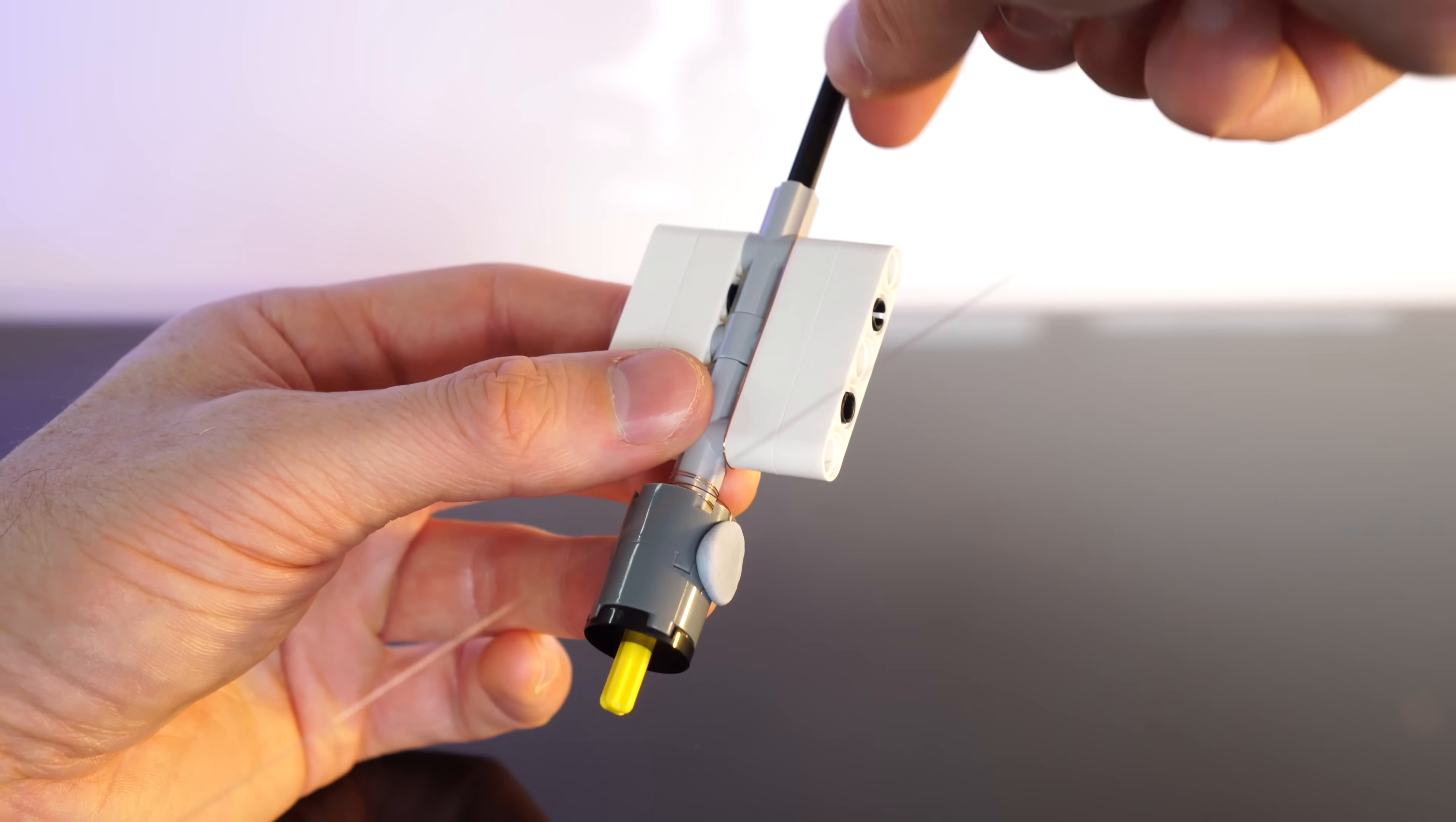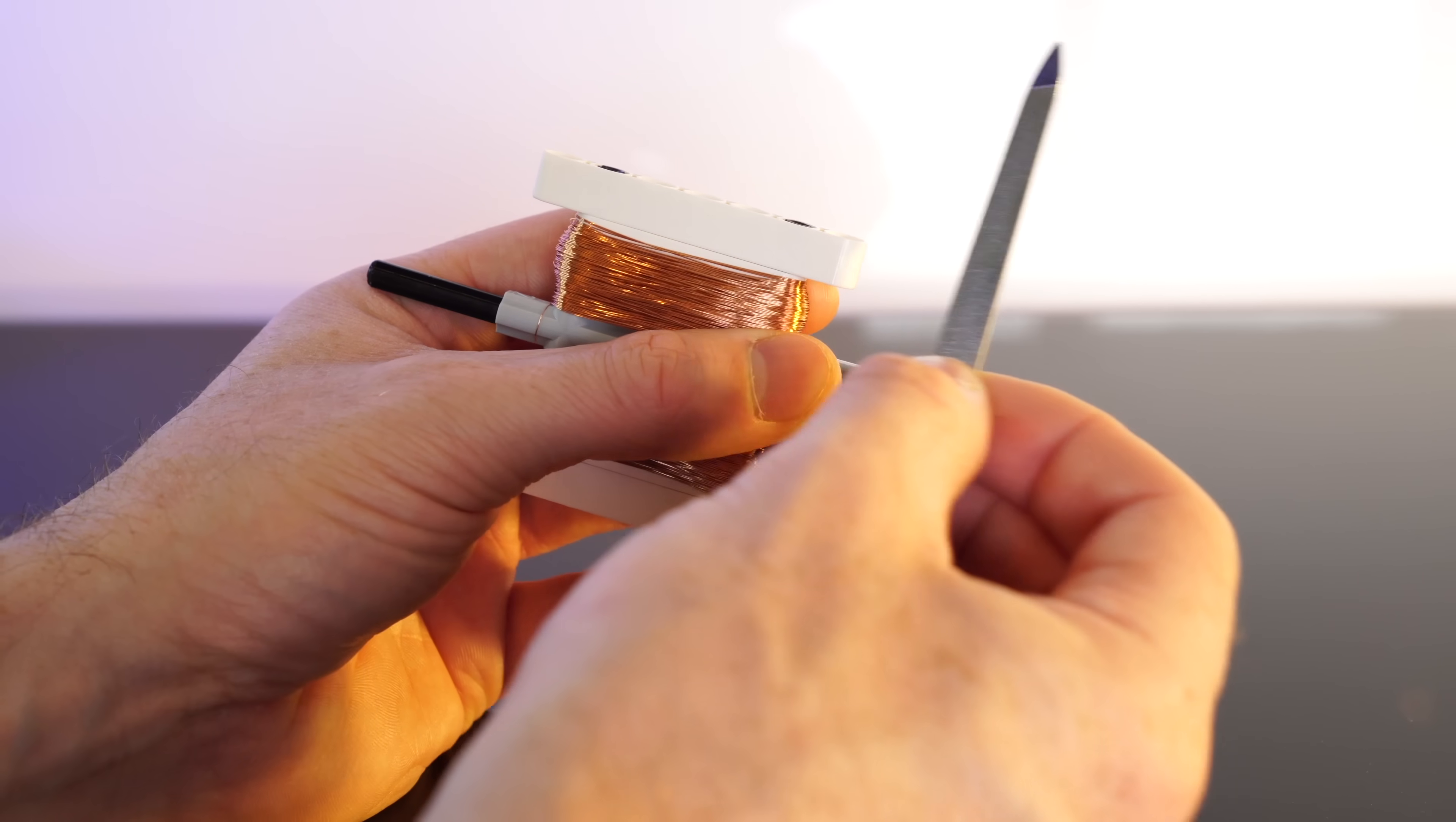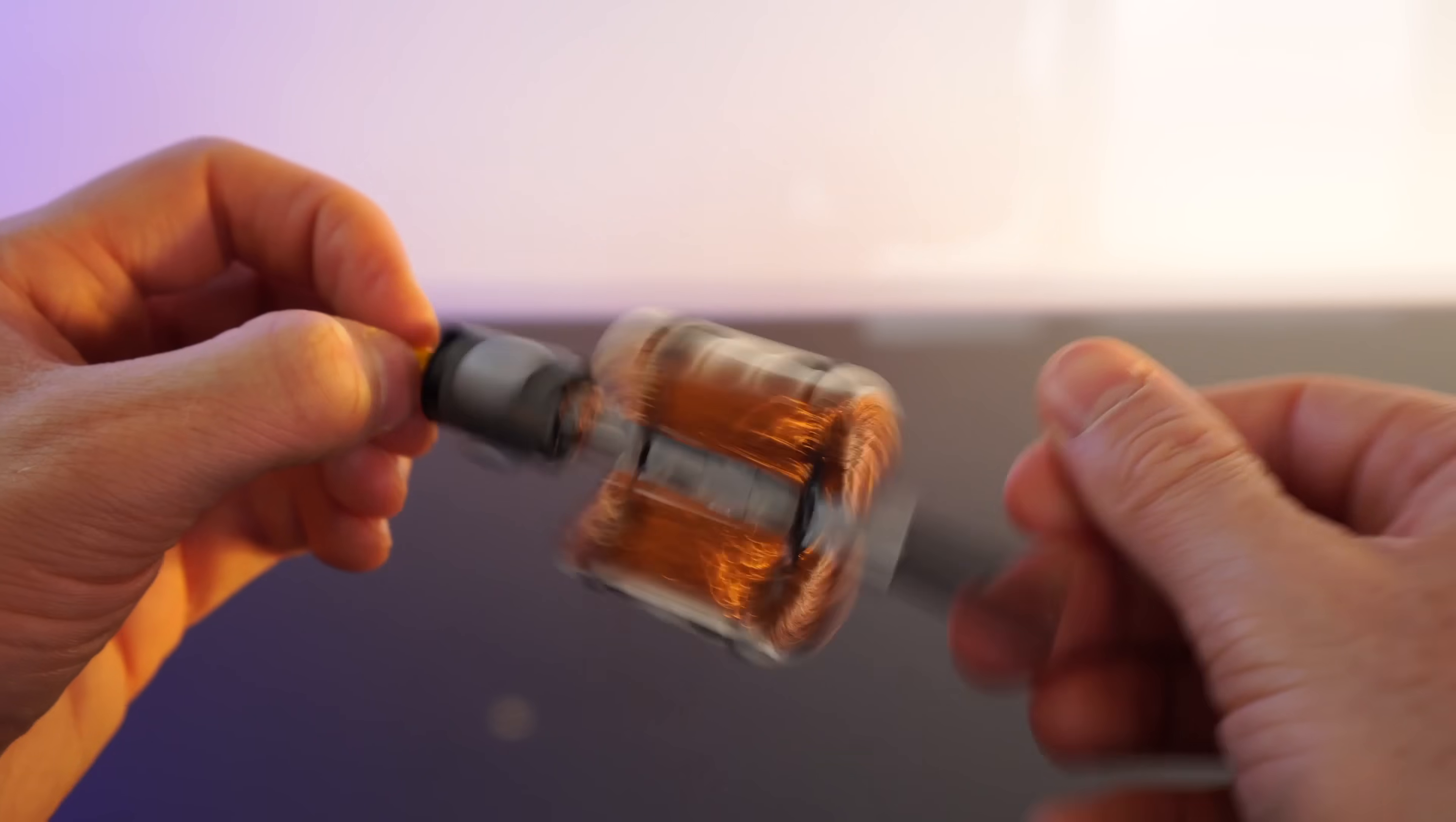We'll start by securing one end with some blue tack. And then after 300 turns of wire on one side we'll swap over to the other and do another 300 turns. Then we'll need to remove the enamel coating from the ends, secure it and now we can chuck away the guards and secure the windings with some rubber bands. In retrospect I have no idea why I thought this would be a good idea.